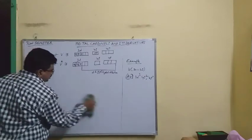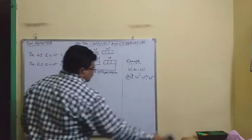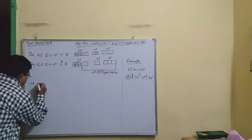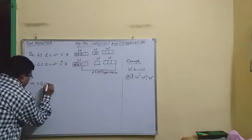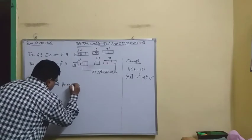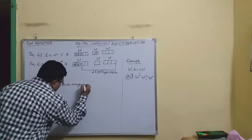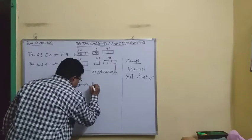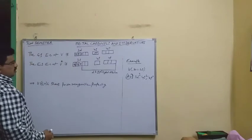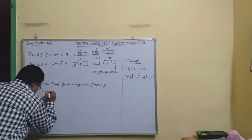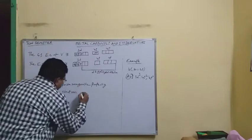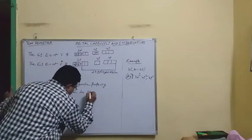The shape of vanadium carbonyl is octahedral. Vanadium carbonyl shows paramagnetic property due to having one unpaired electron in the 3d orbital.